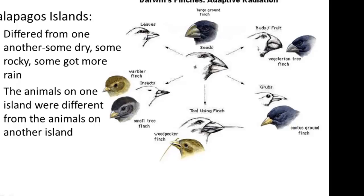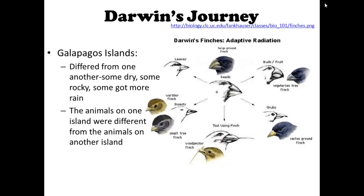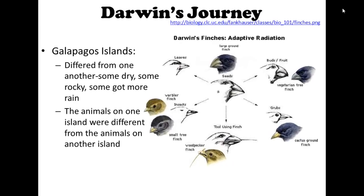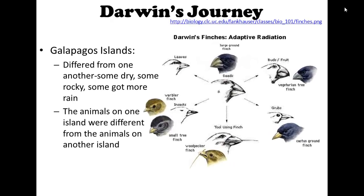He also looked at turtles and many different animals that he observed, all having different variations depending on where they lived, which island they lived on, and what their environment was like. Those are some of his great observations.